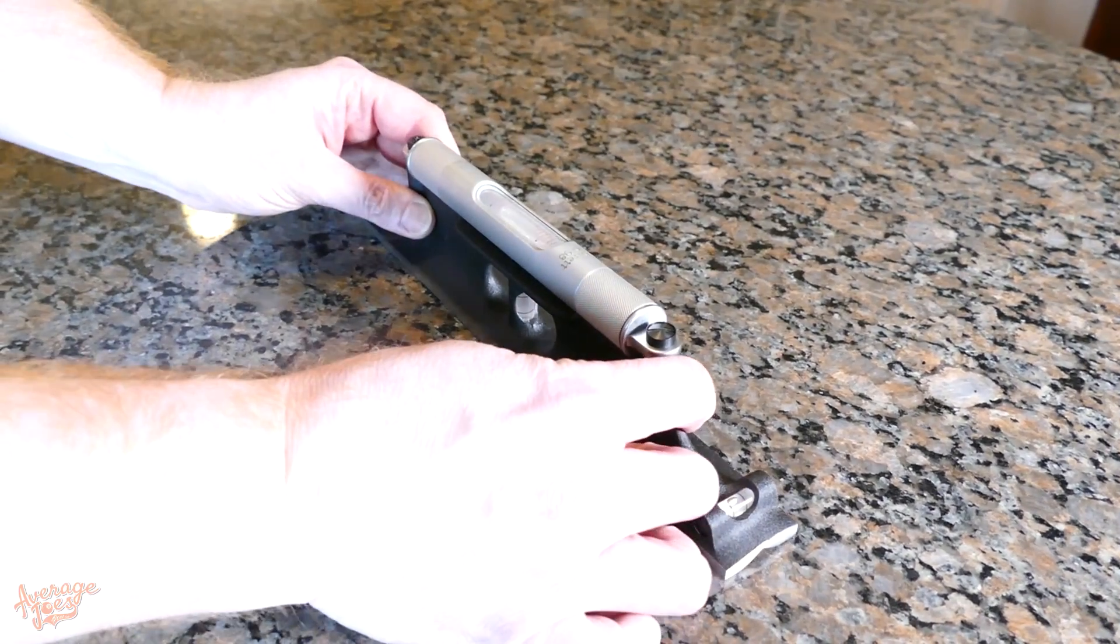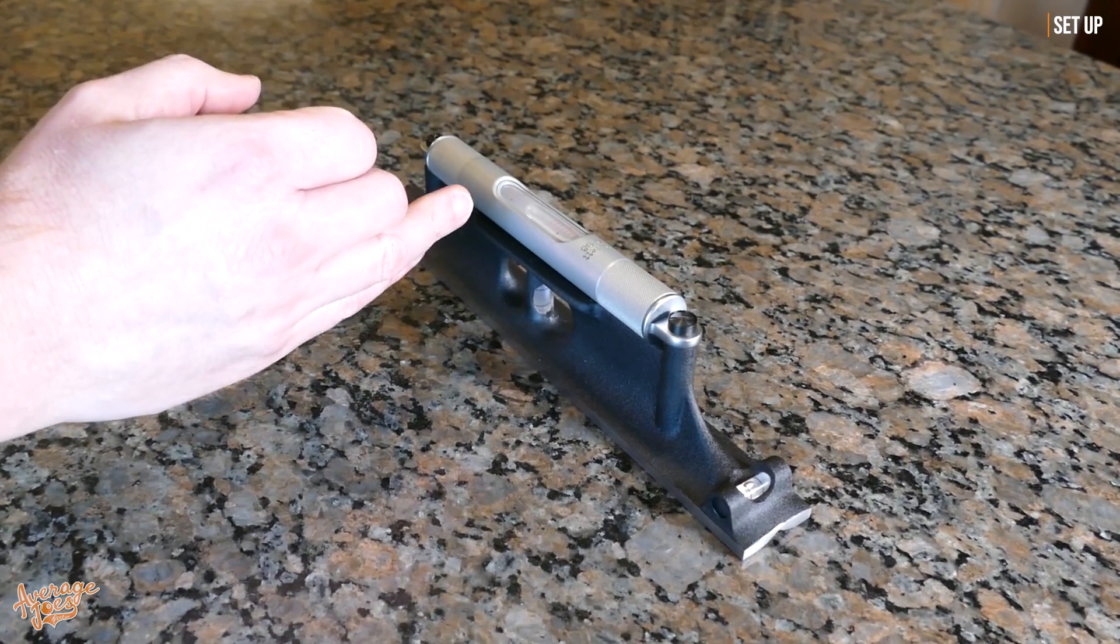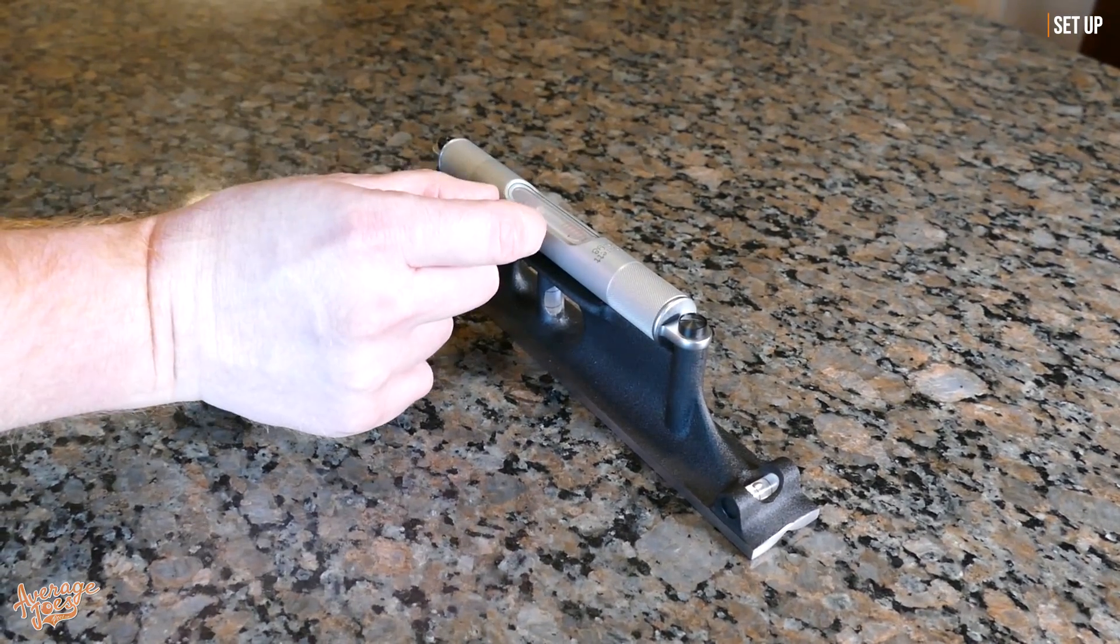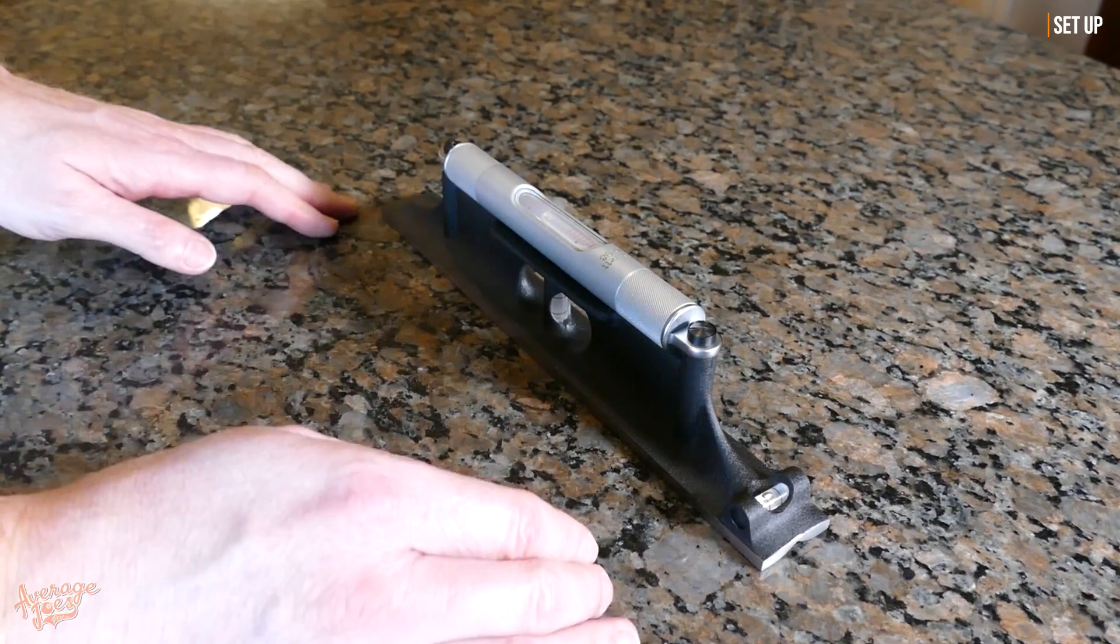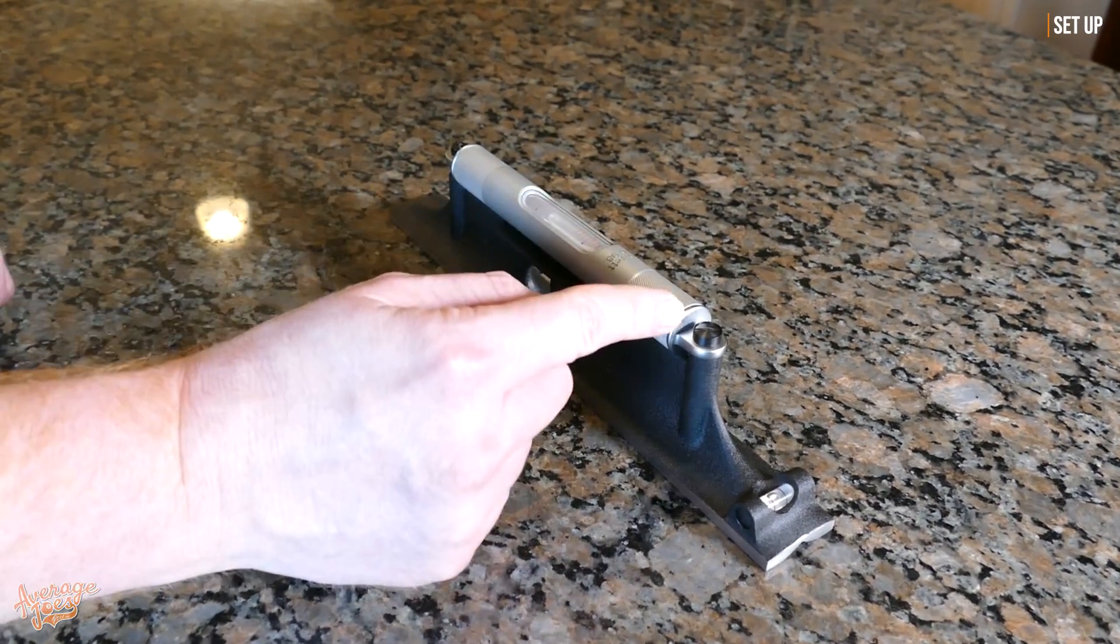What you want to do is put your machinist level on the surface and what you're looking for is just for your bubble to be anywhere in the gauge. It does not have to be center. Remember our surface here does not need to be level, but we need to be somewhere on the gauge. You don't want the bubble right off the gauge.